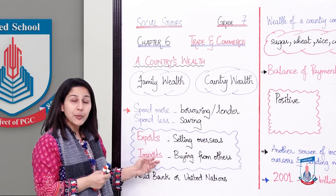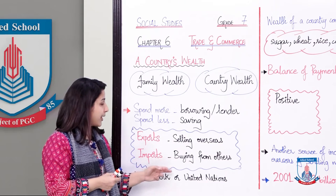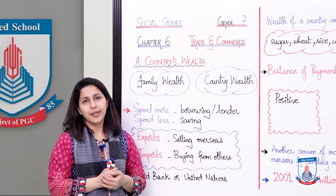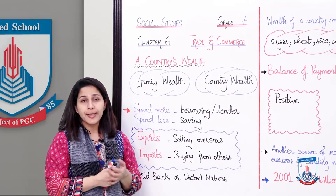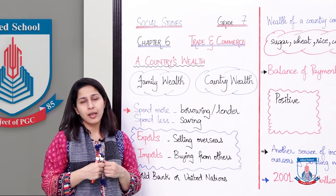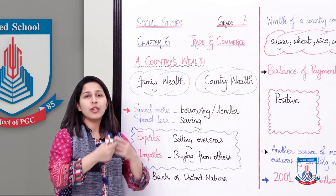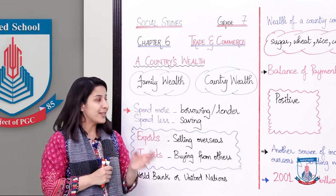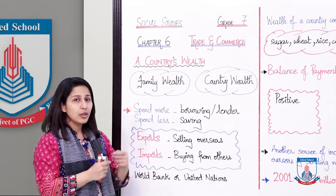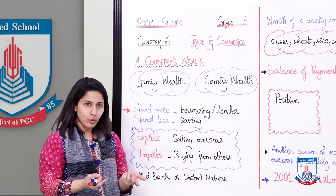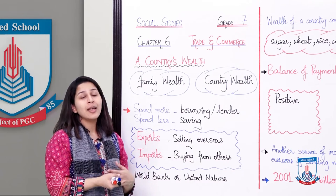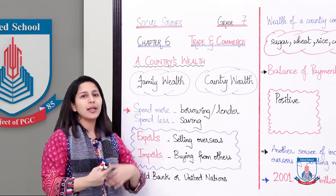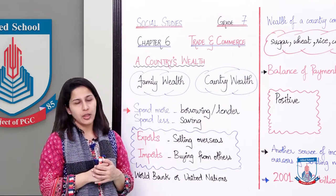Now there's another side as well: imports. Ye woh cheeze hai joh country kharidta hai from other countries — buying from others. Joh cheeze ab us country ke paas nahi hai, woh kisi aur mulk se buy karega. So these are called imports. So it is exactly similar to spending. Spending is imports — kisi aur se cheeze kharidna. And saving, which is exports — ke agar zada bana liya, toh kisi aur ko bechenge, toh humein paise mil jayenge.